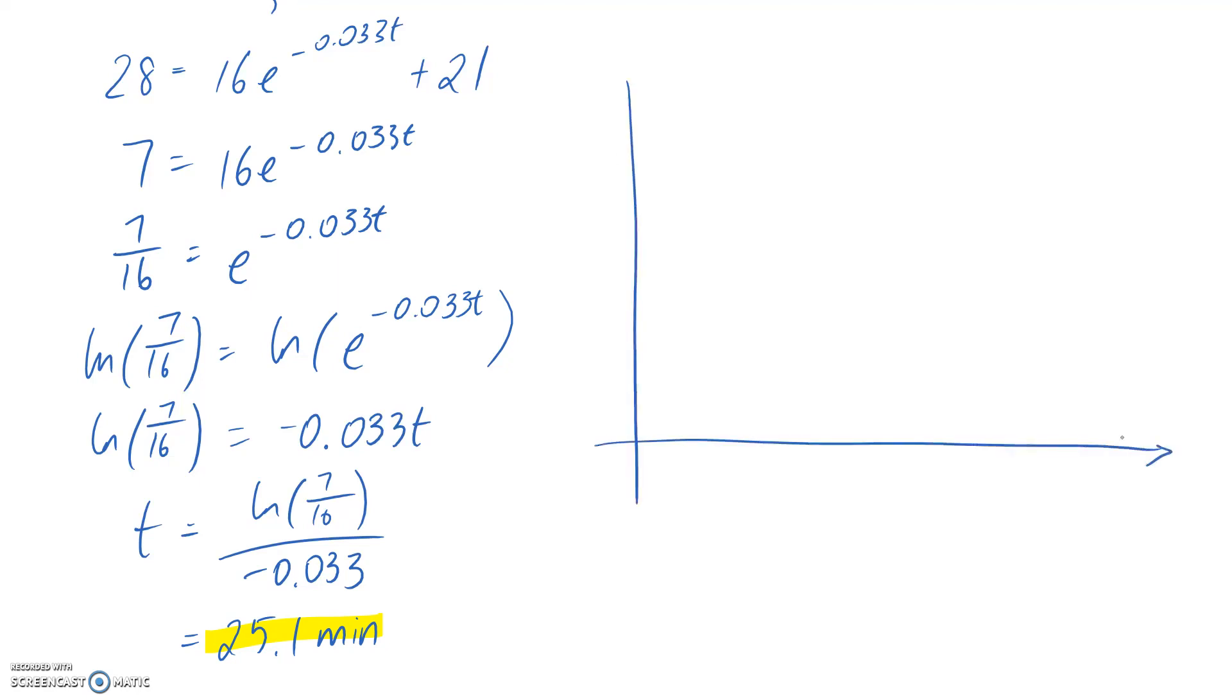If I was to plot this to kind of see what it looks like graphically, remember my two variables are capital T for temperature, which we're measuring in degrees Celsius, and little t for time, which we're measuring in minutes. So we said that the time of death was being considered as t is equal to zero, and that was up here at 37 degrees.